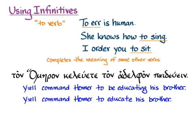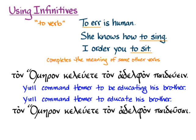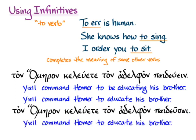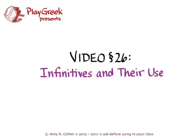We could do this also with an aorist infinitive τὸν Ὅμηρον κελεύετε τὸν ἀδελφὸν παιδεῦσαι and here it's definitely simple aspect so y'all command Homer to educate his brother is completely correct. For now we're only really going to use the infinitive with the verb κελεύω but in the future you'll learn many more ways to use the infinitive and now you know how to form the present and aorist active ones. Go and practice forming and recognizing them in the drills and then enjoy reading them in more complex Greek sentences.